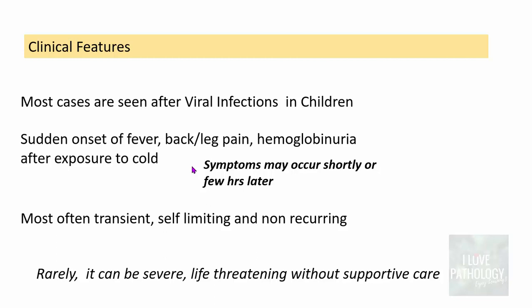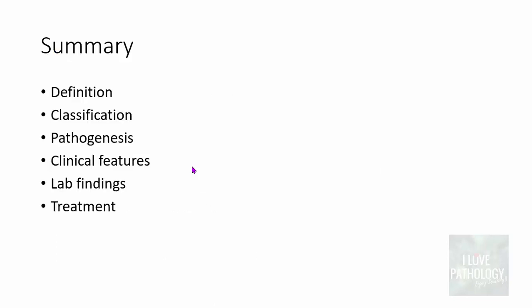That covers immune hemolytic anemias. We discussed the different types — warm antibody type and cold antibody type — including their pathogenesis, clinical features, and relevant lab findings. Treatment was not covered in detail, but most often it includes supportive management.